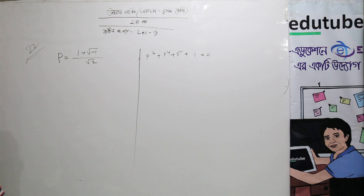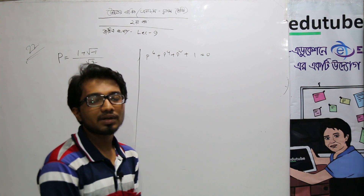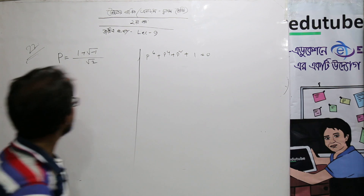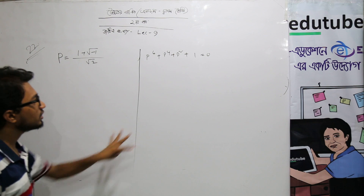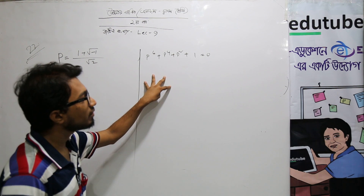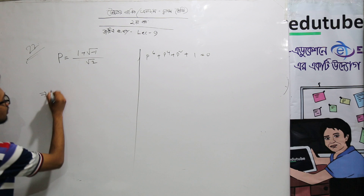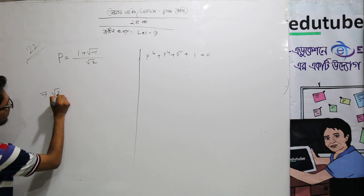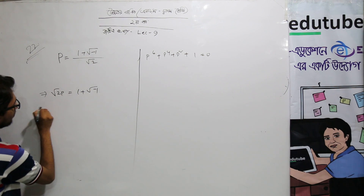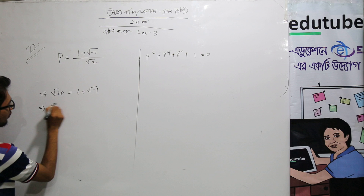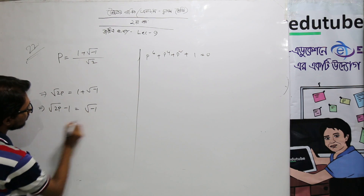We will see the value of this and solve this. 2p equals to 1 plus root over minus 1. Then root over 2p minus 1 equals to root over minus 1.